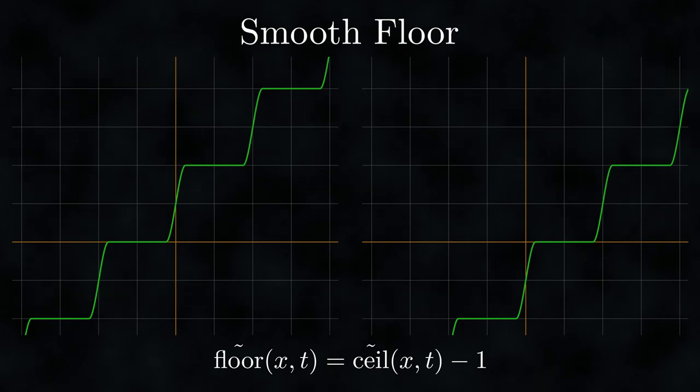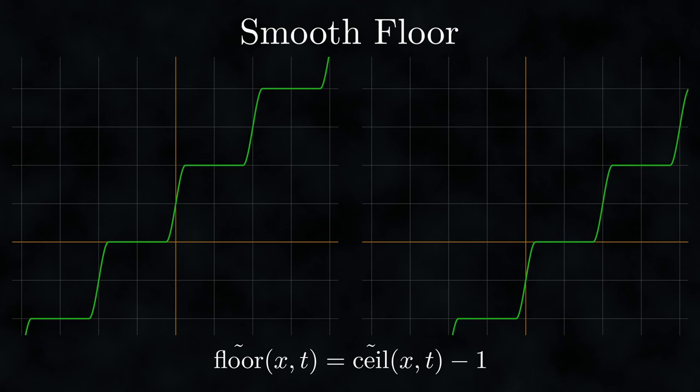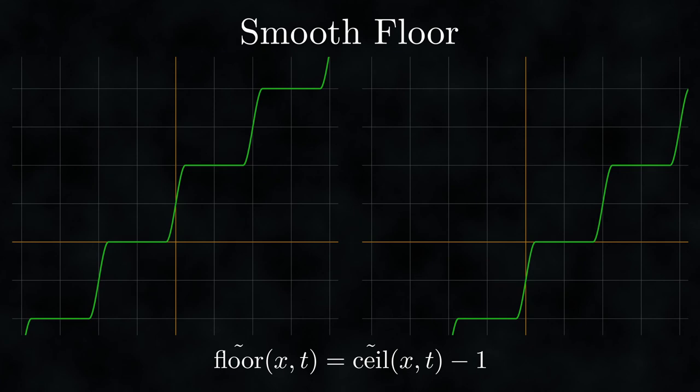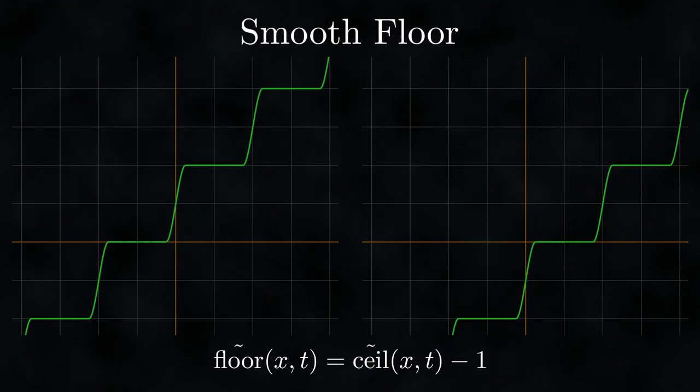The smooth floor function is very similar to the smooth ceiling function and can be derived from it. Since we've already created the smooth ceiling function, we derive smooth floor by simply shifting it one unit down. We've now explored smooth step, smooth pulse, smooth ceiling, and smooth floor. These techniques not only solve practical problems but offer insight into how you can create smooth variants of your own functions. With these foundations in place, we're ready to apply everything we've learned.